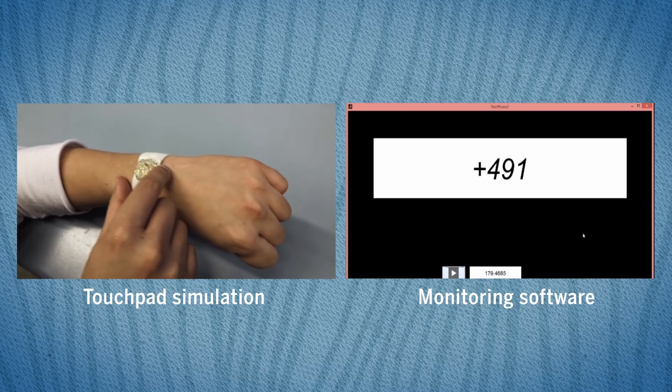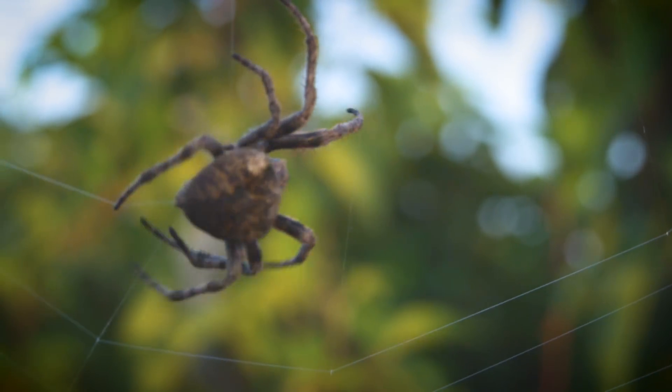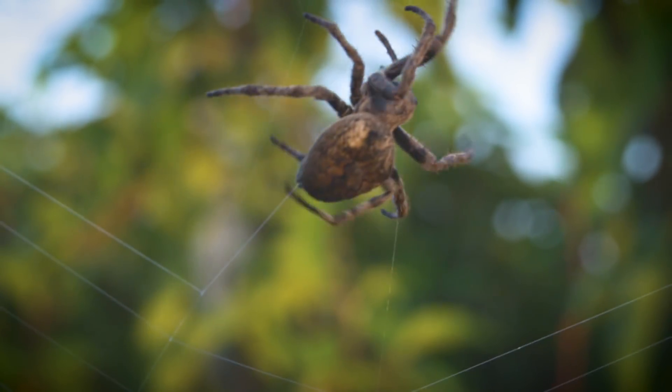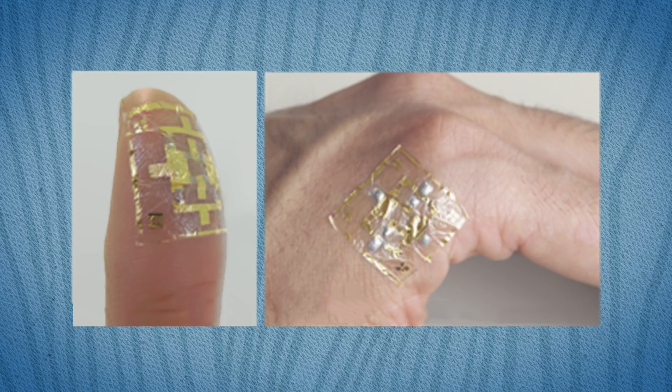The artificial skin is only 3.5 microns thick, about the same width as a single thread of spider silk, and consists of a tiny magnetic sensor sandwiched between two layers of film.